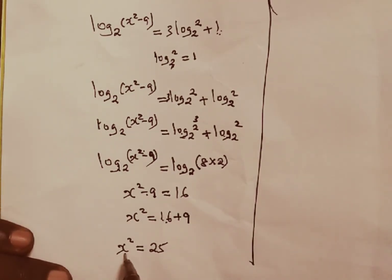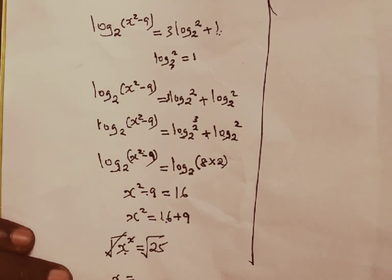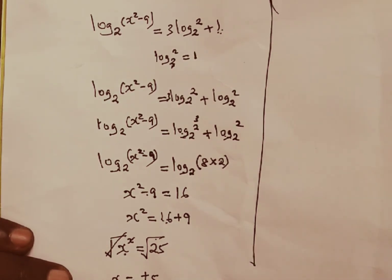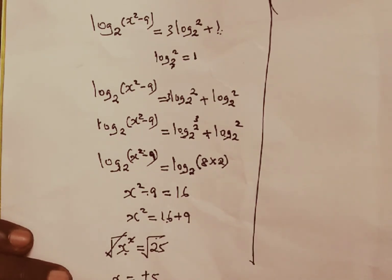And for us to get x, we are going to take the square root on both sides. The square and the square root will cancel, we remain with x, and our x is going to be, the square root of a number is plus or minus the number. And in this case, the square root of 25 will be 5, and that is the answer to our question.